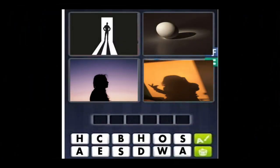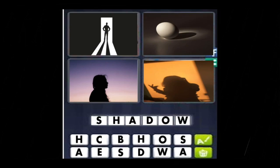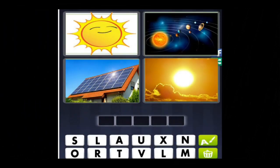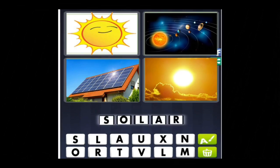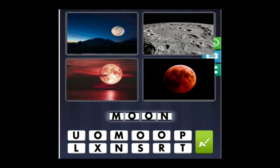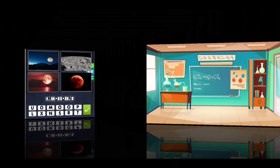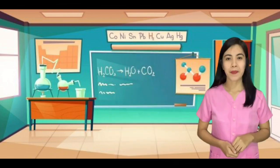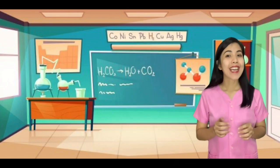What is the word on the first picture? Correct! That is the shadow. How about the second picture? Good job! That is solar. And for the last picture? Very good! That is moon. So, what do you think is the relation of those pictures in our lesson for today? That's right! Our lesson for today is all about eclipse.